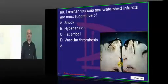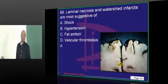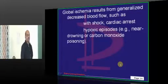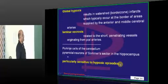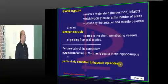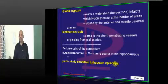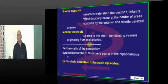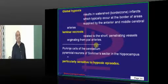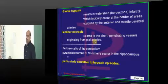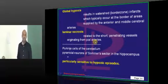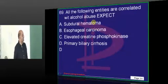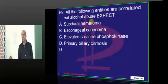Where do you find laminar necrosis? Typically, whenever there is global ischemia as in a shock patient, there is laminar necrosis because of involvement of short penetrating vessels originating from the pial artery. Hypoperfusion of these vessels leads to the development of laminar necrosis.